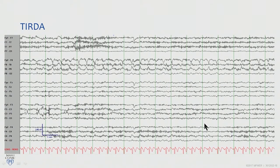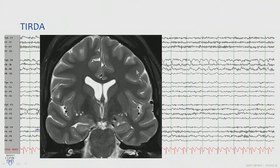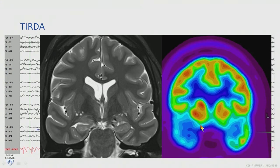This is a patient I recently saw with temporal lobe epilepsy. She has this rather long run of TIRDA — temporal intermittent rhythmic delta activity — that comes and goes, and it's commonly associated with temporal lobe epilepsy. This patient has evidence of MTS in the right hippocampus, and her PET scan very profoundly showed hypometabolism over the right temporal lobe as well.